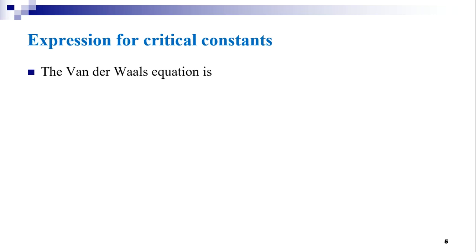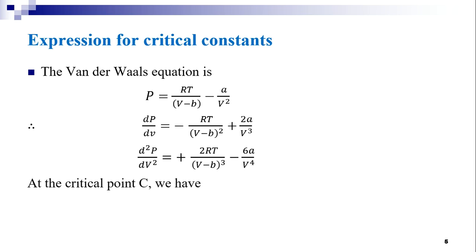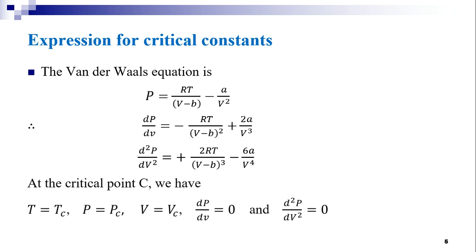The Van der Waals equation written in terms of pressure is: p = RT/(v − b) − a/v². Taking the derivative of p with respect to v, we get dp/dv = −RT/(v − b)² + 2a/v³. And d²p/dv² = 2RT/(v − b)³ − 6a/v⁴. At the critical point C, t = Tc, p = Pc, v = Vc, dp/dv = 0, and d²p/dv² = 0.